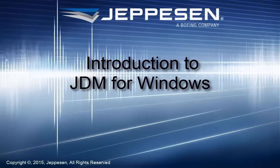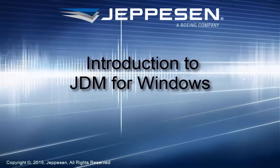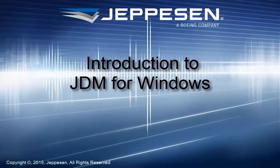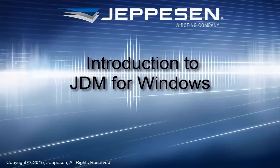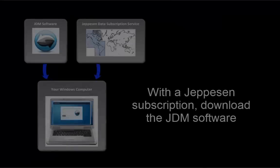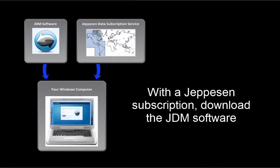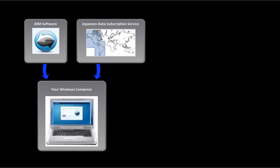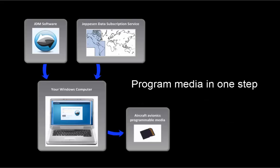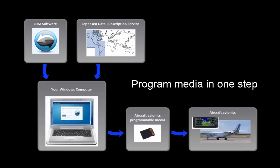With Jeppesen Distribution Manager, or JDM, you can update your avionics data and charts databases using your Windows computer. After you set up an account with Jeppesen for a subscription to our NAV data and charts services, download the JDM software from our website. Then use JDM to download your NAV data and charts on a regular basis. The program can download NAV data and charts and program them to your avionics media in one step.